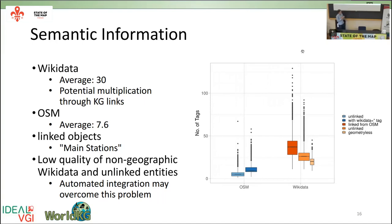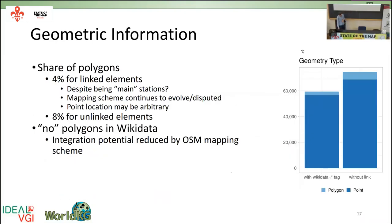The difference between OSM objects with a link to Wikidata versus those without is present but smaller than expected. It seems there are main stations that are well-mapped in OSM and some other stations with fewer tags. On the other hand, Wikidata has a lot more tags — an average of 30 tags per element. This is amplified by the links in the knowledge graph: Wikidata not only has a large amount of semantic information but also many links that carry additional semantic information linked to the object.